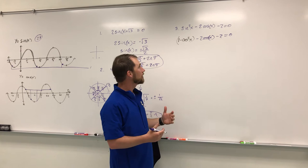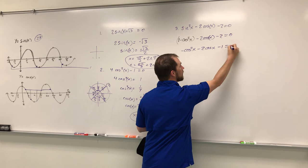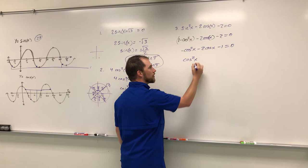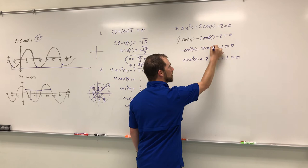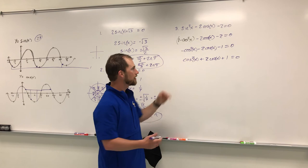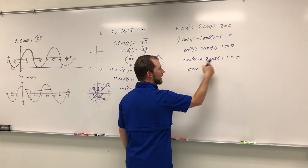Getting everything in order and combining like terms, we get negative cosine squared x minus two cosine x minus one equals zero. We divide everything by negative one to make it easier to factor: cosine squared x plus two cosine x plus one equals zero. We can factor this as cosine x plus one, squared, equals zero. It looks like a simple perfect square trinomial — factors of one that add to two are simply one and one.